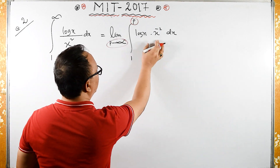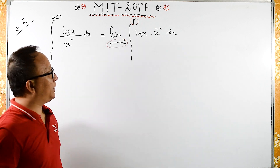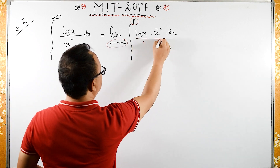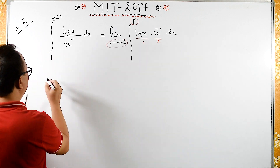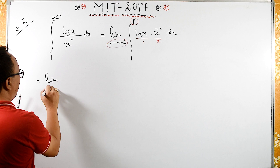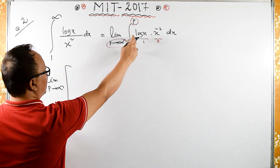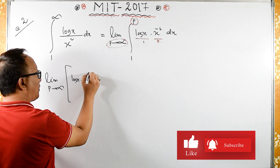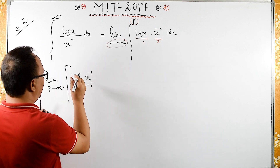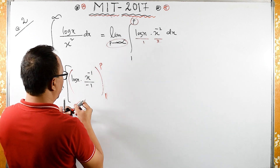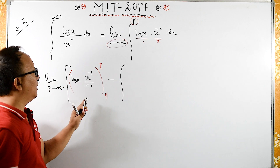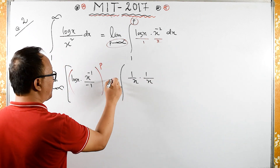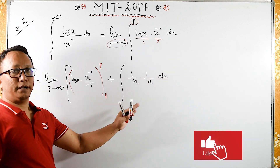Now let us apply integration by parts — you can also use tabular or DI methods as you prefer. Considering log(x) as the first function and x⁻² as the second function, this equals the limit as p tends to infinity of log(x) times x⁻¹ divided by minus 1, from 1 to p, minus the integral of 1/x times 1/x dx.